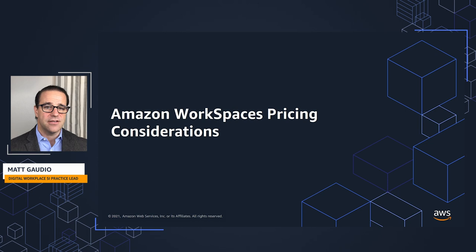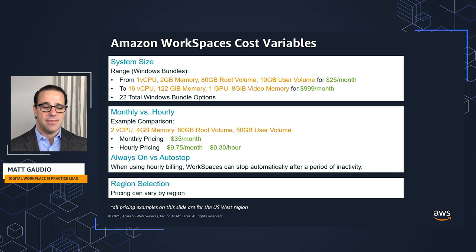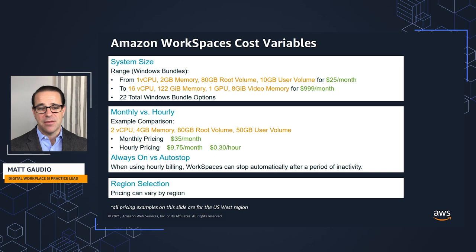Now let's look at the cost variables directly related to consumption of Amazon WorkSpaces. The system size is the first one. There are various bundles — this specific example is from the US West region for a Windows bundle. This ranges from a single CPU with low memory and small storage all the way up to 16 CPUs, a lot of memory, a lot of storage, and a GPU for certain use cases, but not for most. This range could be anywhere from $25 to almost $1,000 a month.